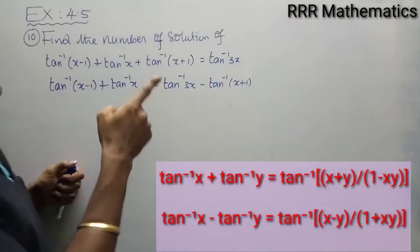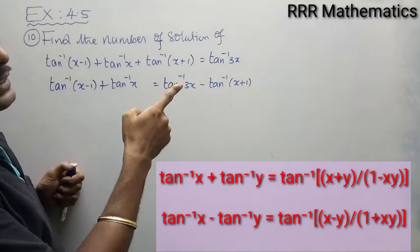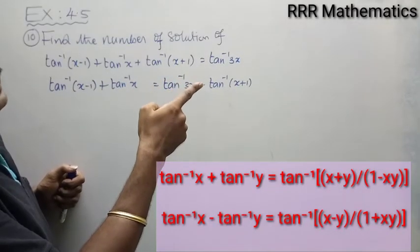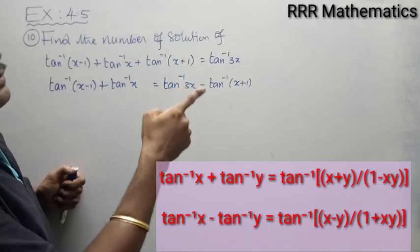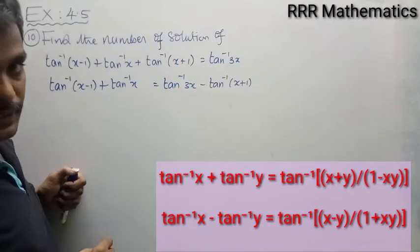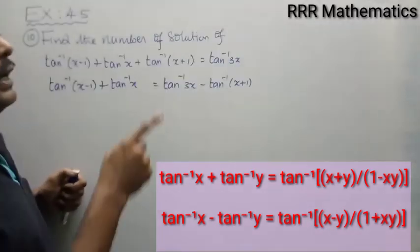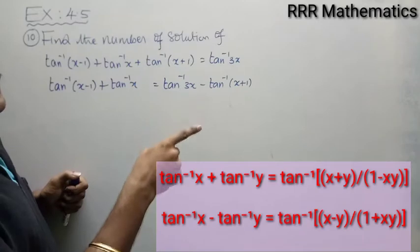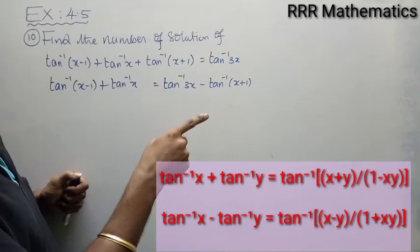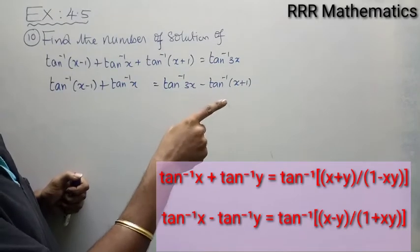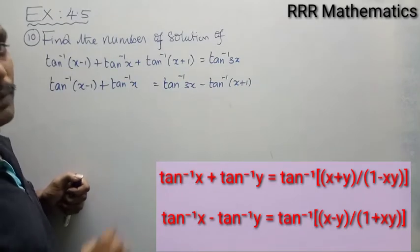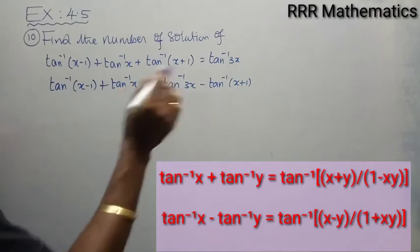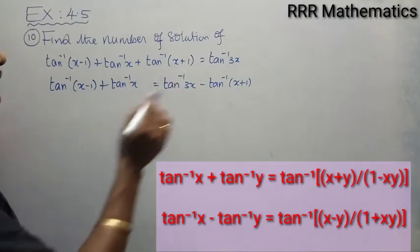See the formulas: tan inverse x plus tan inverse y equals tan inverse of (x plus y) divided by (1 minus xy). And tan inverse x minus tan inverse y equals tan inverse of (x minus y) divided by (1 plus xy). We will use these identities.